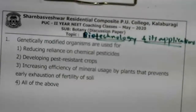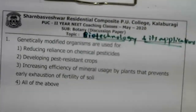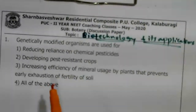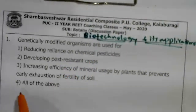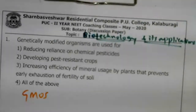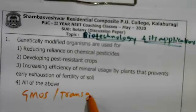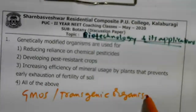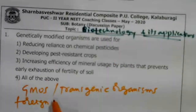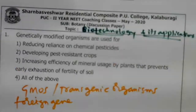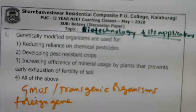Good evening students. Tomorrow we have a test on biotechnology and its applications. We'll start with question number one. Genetically modified organisms, also called transgenic organisms, carry a foreign gene in them — from a microbe, plant, or animal. So why do we use these genetically modified organisms?